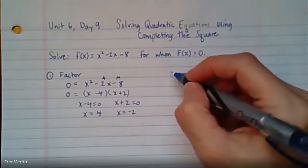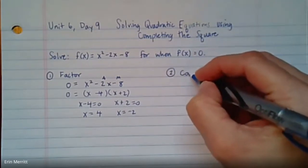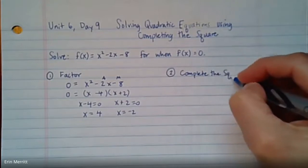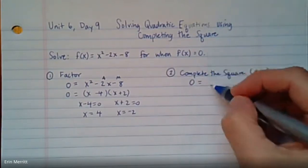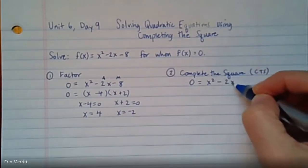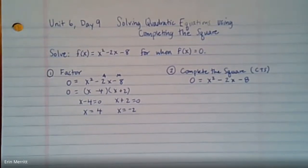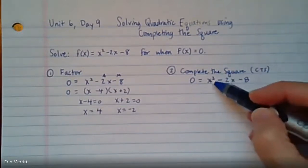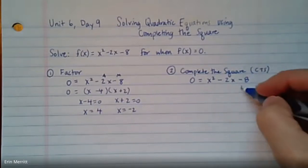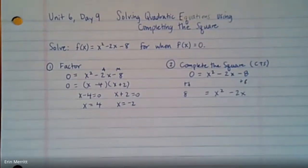The second way is how we can use completing the square, which sometimes you'll see abbreviated to CTS. Let's put in the zero still and x squared minus 2x minus 8. The completing the square steps are exactly the same as converting to vertex form. You get the x squared terms alone, so add 8 to the other side.